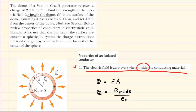Since part A is asking us to figure out the electric field inside the dome, based on this property, the electric field inside is equal to zero newtons per coulomb. So zero is the correct answer to part A.